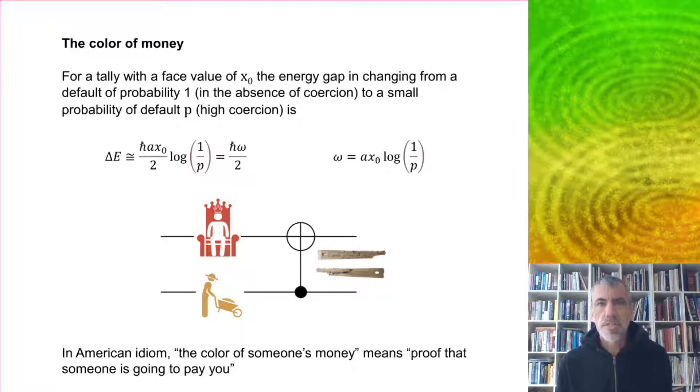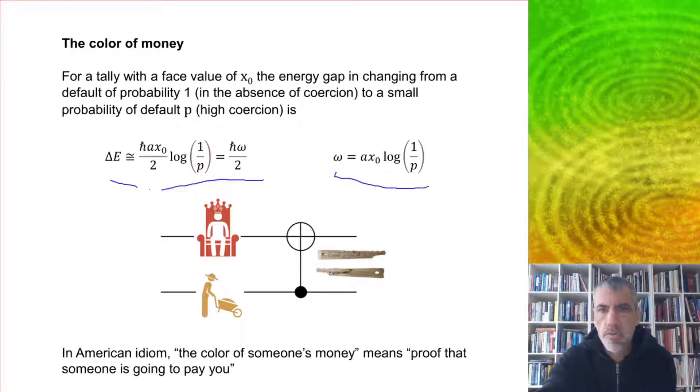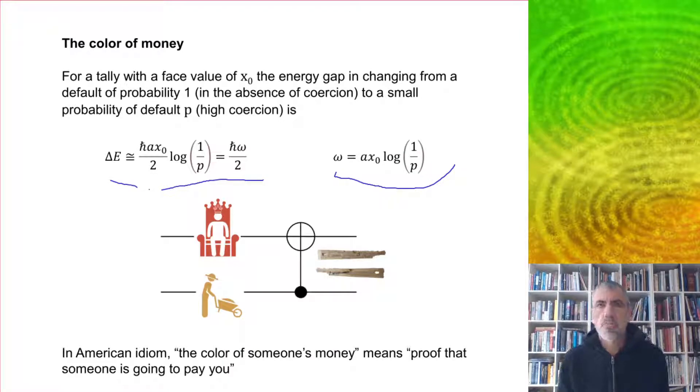We can apply this threshold idea to money objects discussed earlier. For a tally stick with a face value of x0, the energy gap in changing from a default probability of 1 in the absence of coercion to a smaller probability of default p under high coercion is given by the formula ℏω/2, where ω involves the face value and a logarithm 1 over p.